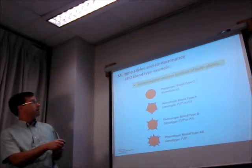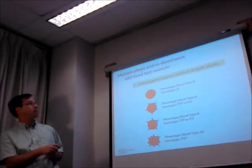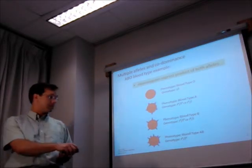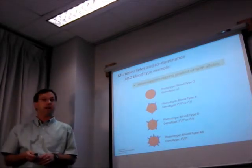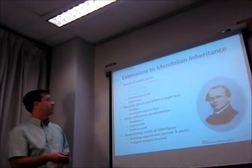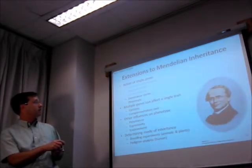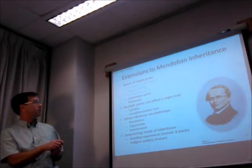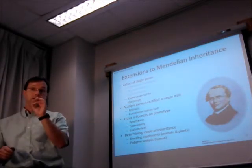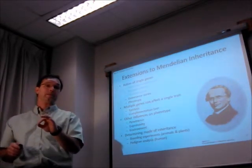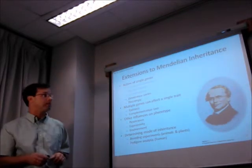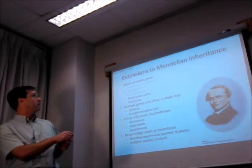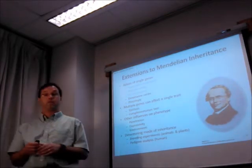This illustrates the principle of co-dominance, because in this case heterozygotes express the product of both of the alleles. So you're expressing the product of the IA allele and the IB allele. So this gets us through incomplete dominance, multiple alleles, and co-dominance. So you should understand from incomplete and co-dominance that the dominance or recessiveness of an allele is not inherent in the allele itself, but is determined by how it's interacting with other alleles. And you should understand that some genes have multiple alleles.